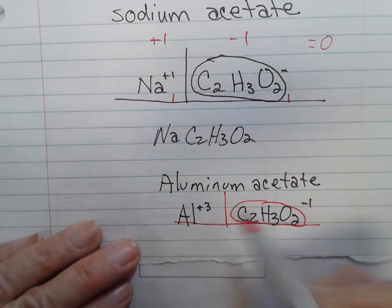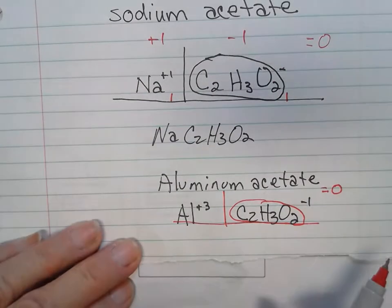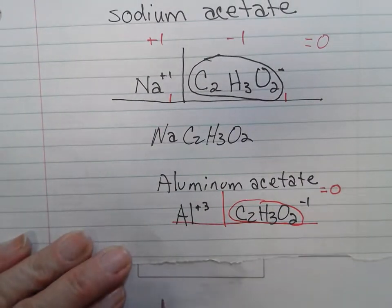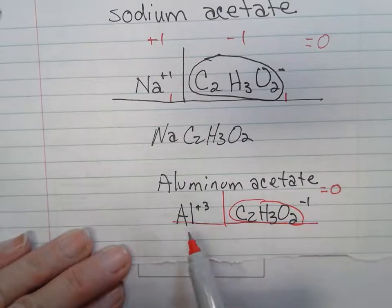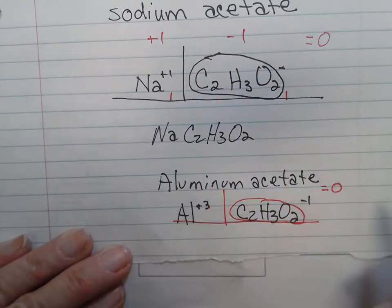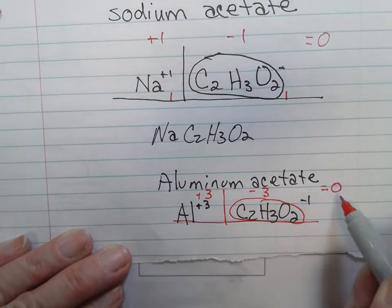Now, this time, I know I'm still dealing with a compound. My overall charge has to be equal to zero. When I balance these charges out, I have to look for a least common multiple between three and one. So that's going to be a three. This can be a positive three plus a negative three. It's going to equal zero.